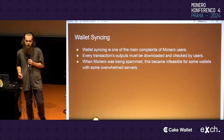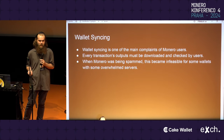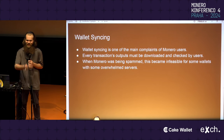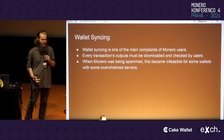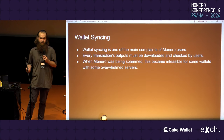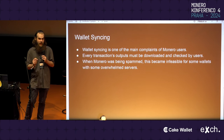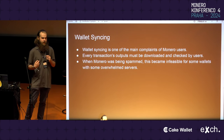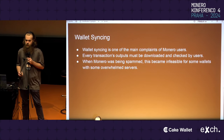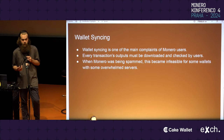The next topic I want to approach is wallet syncing — one of the main complaints of Monero users. As of right now, you need to download every single transaction's outputs and run a scan process on it. This is linear: as the amount of outputs goes up, the scan time goes up, as does your bandwidth. When Monero was being spammed, this unfortunately became infeasible for some wallets and servers. Cake actually had to do a lot of work making their servers more efficient and responsive to this.